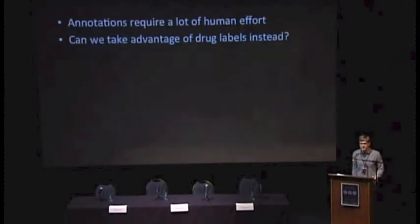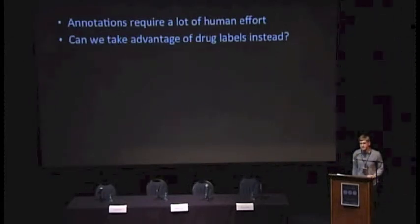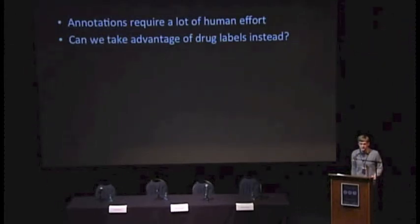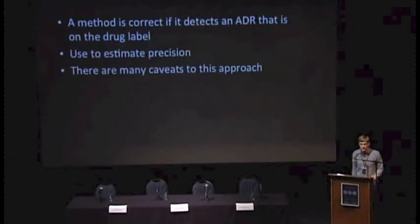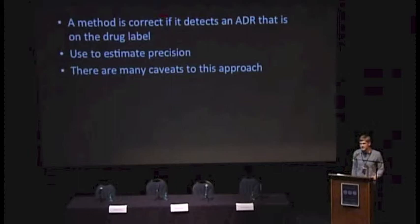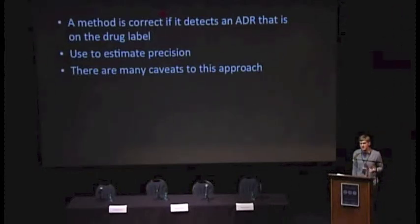The problem is that we need annotations, and it's very time-consuming to annotate forum posts. We do have drug labels which should list most of the ADRs that can be found for the drug. So maybe there's some way to take advantage of those drug labels. We assume a method is correct if an ADR it finds in a forum post, tweet, or other social media post is also on the drug label, and use this to determine how well we're doing. Of course, there are a lot of caveats.